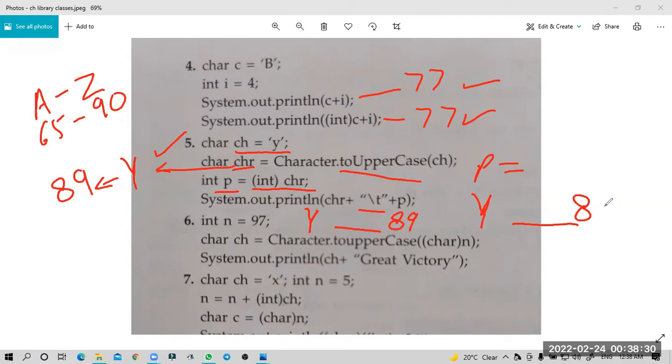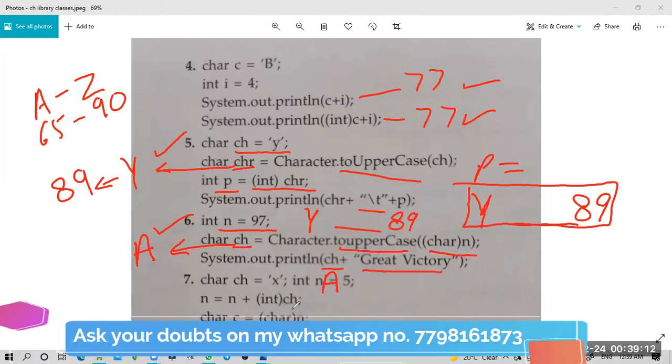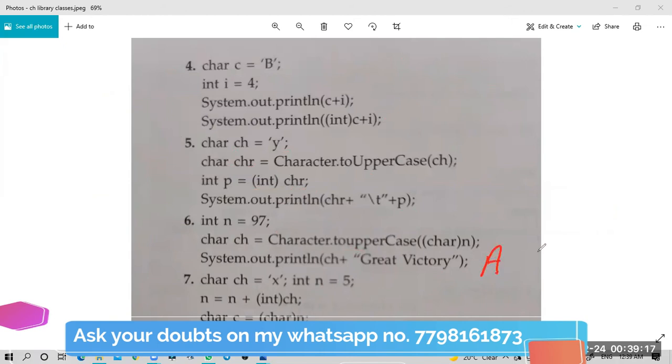Question six: n equals 97, ch equals Character.toUpperCase((char)n). 97 means small a, converted to uppercase becomes capital A. In ch you get capital A, then it prints capital A plus the message "Great Victory". Answer: A Great Victory.